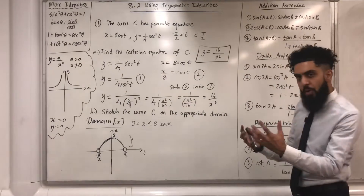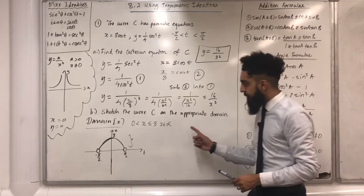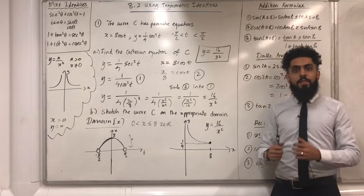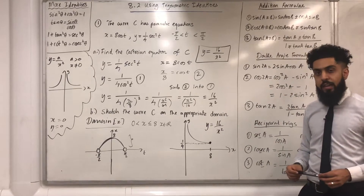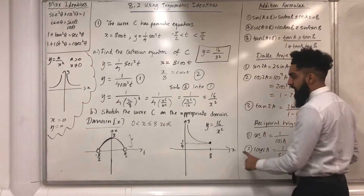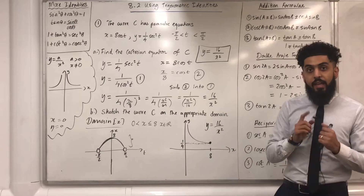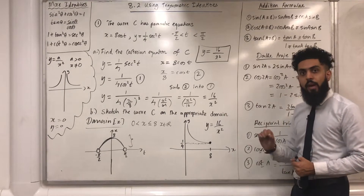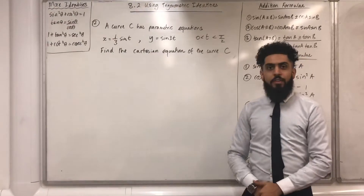Now I'm going to sketch curve C, which represents y equals 16 over x² for the domain x is more than 0 but less than or equal to 8. The sketch looks something like this. At x equals 8, the point is filled/shaded because x equals 8 is included in the domain. Let's move on to question number 2.